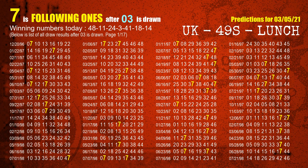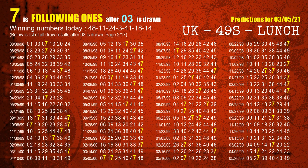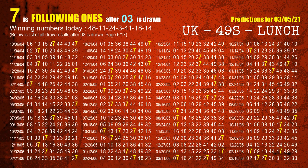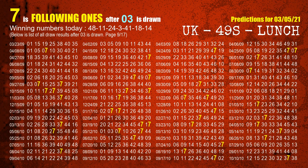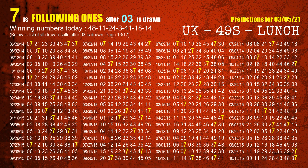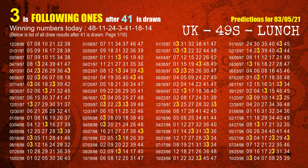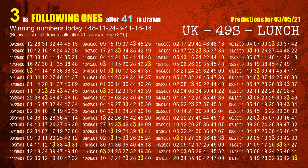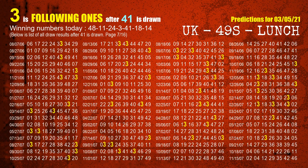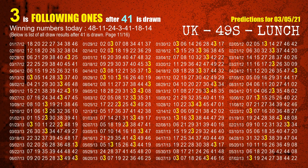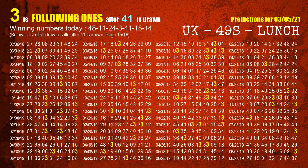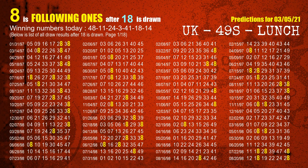The fourth winning number is 03. The most frequently following units digit is 7 when 03 is the winning number in the last draw. The fifth winning number is 41. The most frequently following units digit is 3 when 41 is the winning number in the last draw. The sixth winning number is 18. The most frequently following units digit is 8 when 18 is the winning number in the last draw.